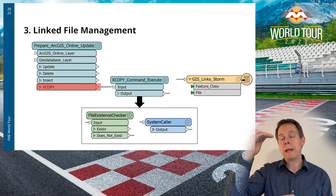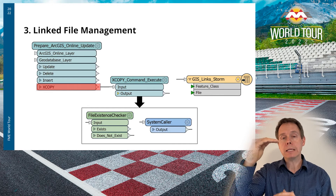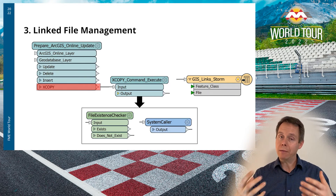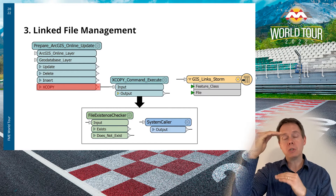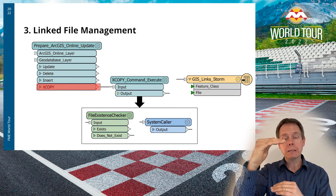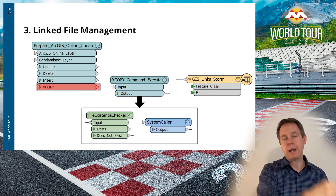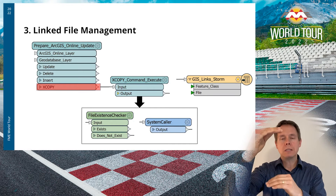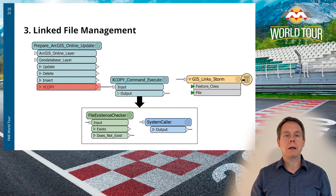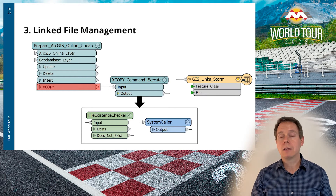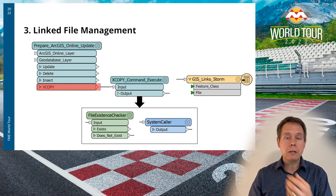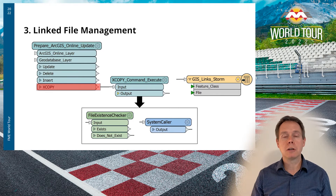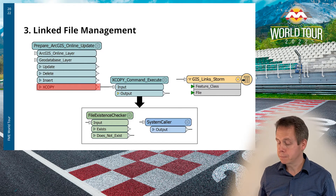At the same time I maintain a list of all my links. A separate process compares GIS links against what's on the network file share and on the web server, and produces a spreadsheet showing all the differences. Every morning I can see what changed and fix any mistakes I made.